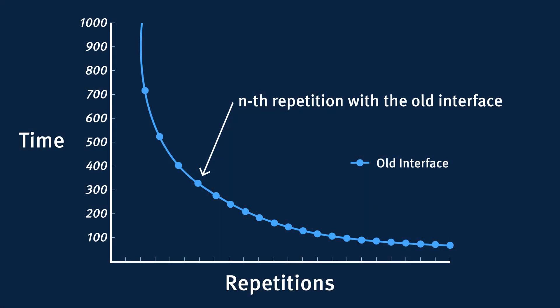Let's now look at a redesign scenario. One big problem for application designers is that when a new version of their app is released, established users complain. So why do users dislike the new version so much? With the old interface, they may have already reached the area of the curve where their performance is pretty much stable. Because they've used the interface a lot in the past, they are already efficient at doing the task and there is not much learning to be done — they are in the flatter area of the curve.